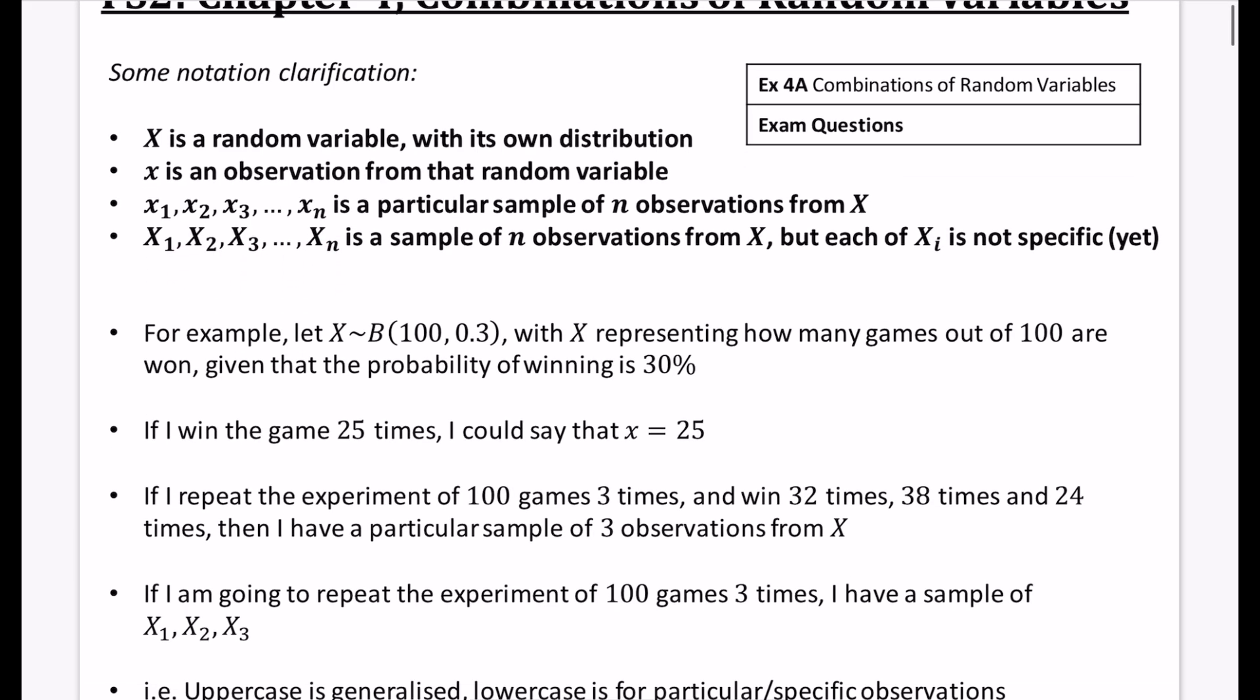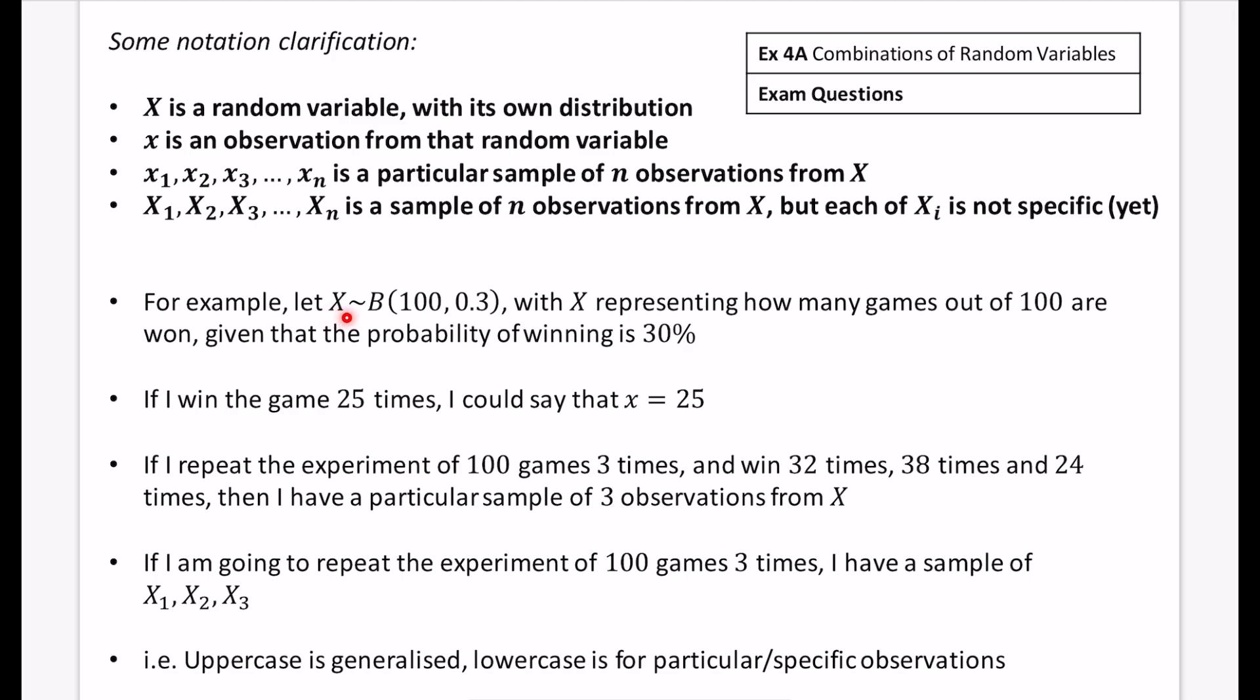So for example, if my X was distributed, my random variable X was a binomial distribution with 100 things and 0.3, where X represents how many games out of 100 are won, given that the probability of winning is 30%, well, if I win the game 25 times, I could say that lowercase x is 25, because that's a particular observation of 25 from this distribution that we've got here.